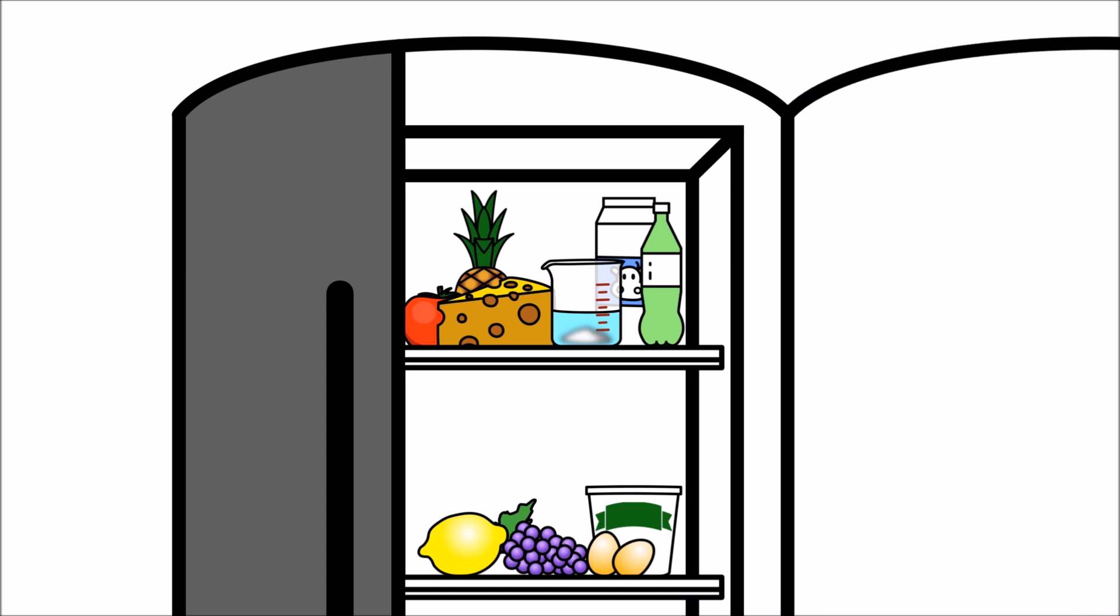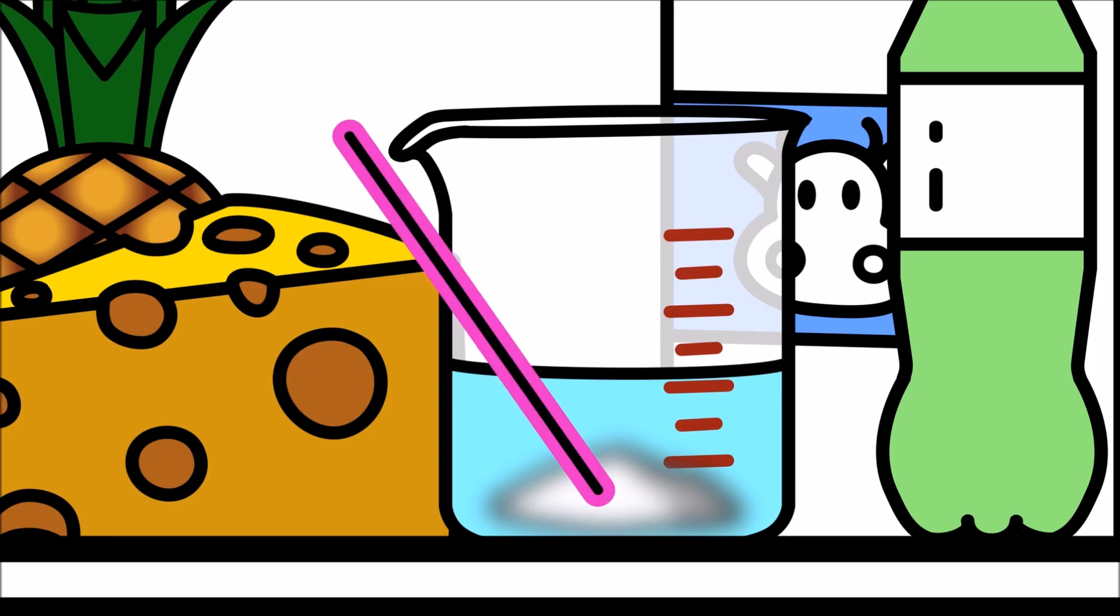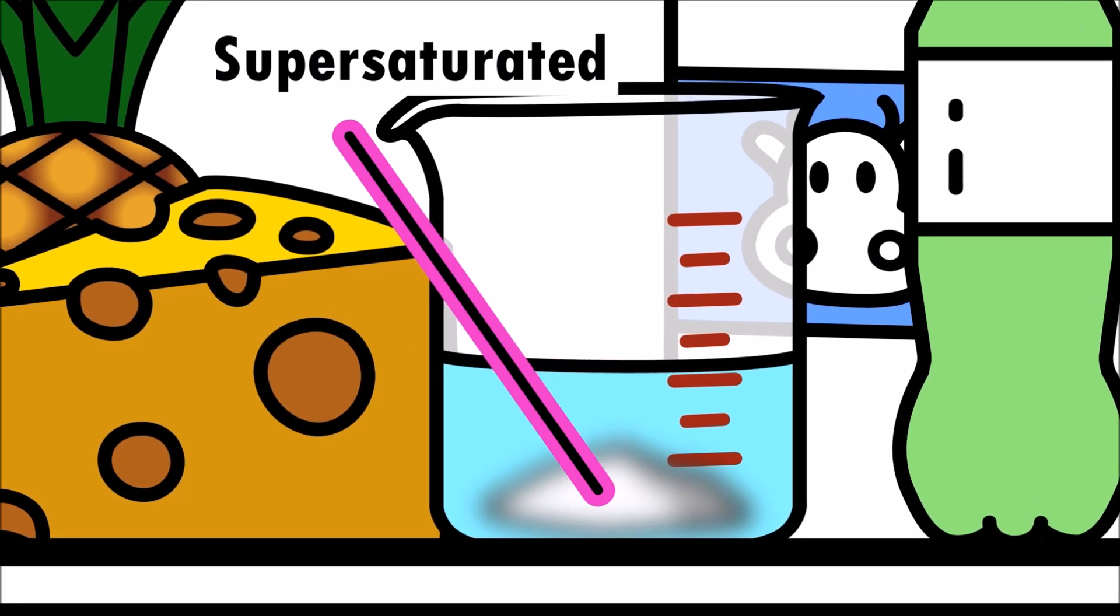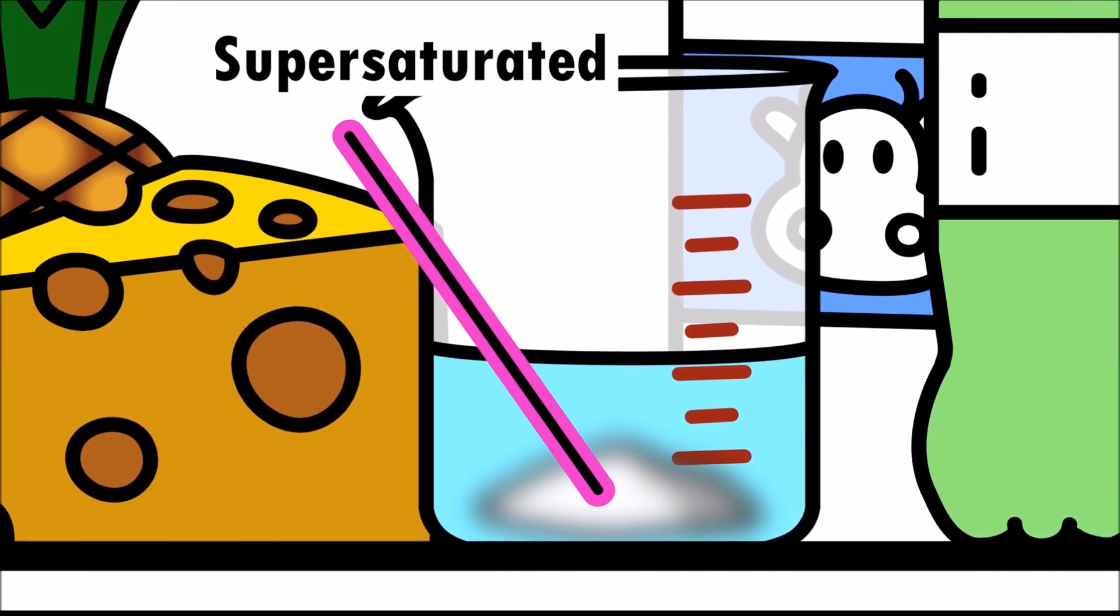When the solution is cooled, we are able to see the solute. This is because the solution has become supersaturated, meaning that the solute is no longer fully dissolved in the solvent.